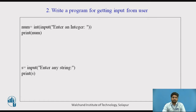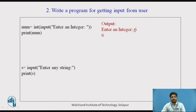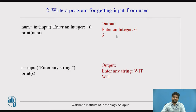The output for these two simple programs would be: if there is a message to the user 'Enter an integer' and the user enters 6, the output would be 6. And for the string input, the message would be 'Enter any string' — if the user enters 'wit', the output would be 'wit'.